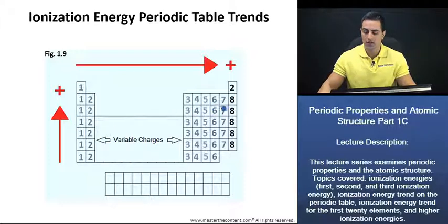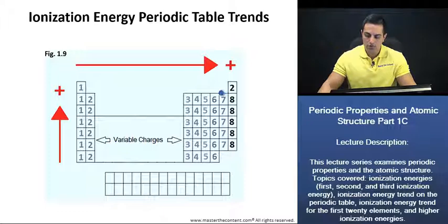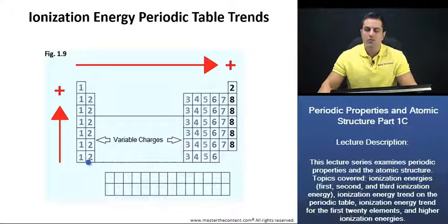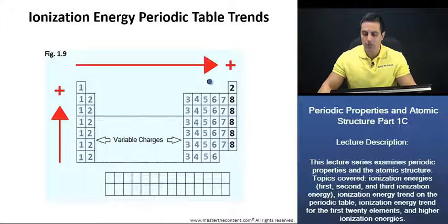If you contrast that with, for example, the halogens — that being main group seven — they have seven valence electrons and they would rather gain one electron than give up seven electrons to obtain a full outermost shell. Thus, the right side of the periodic table would rather gain electrons while the left side would rather give up electrons. So it makes sense that the ionization trend increases going to the right, because it's going to take less energy to remove those valence electrons on the left side, and more energy to remove those on the right side, since they would rather gain electrons than give them up.